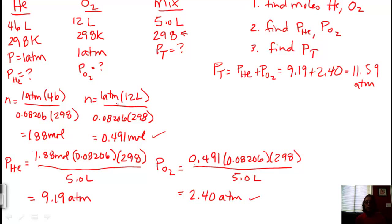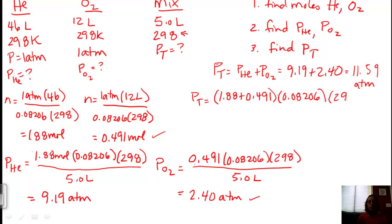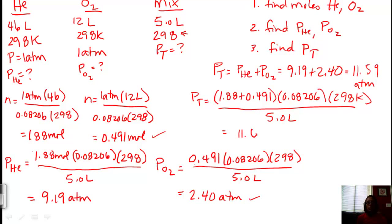We could also use the ideal gas law with the total number of moles as a check: P_total = N_total × RT / V = (1.88 + 0.491) × 0.08206 × 298 / 5 = 11.60 atmospheres. You can see the answers are basically the same accounting for significant figures, so you have two different options to solve for total pressure.